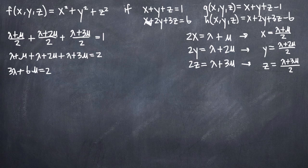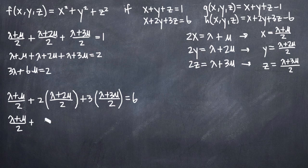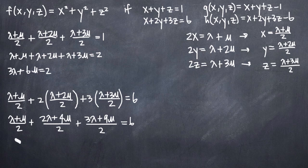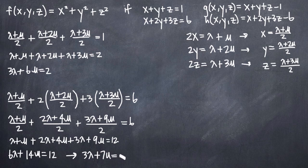We do the same with the second constraint equation, plugging in x, y, and z, distributing the coefficients 2 and 3 across the fractions, then multiplying both sides by 2 to cancel the fractions, and combining like terms. Dividing through by 2 to simplify, we get 3 lambda plus 7 mu equals 6.